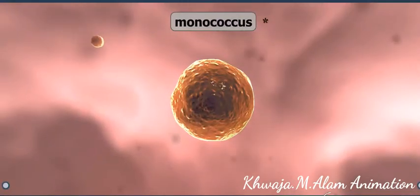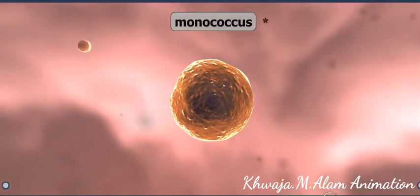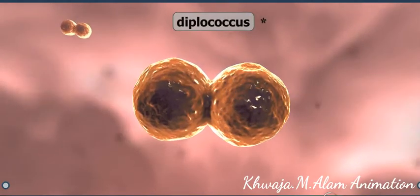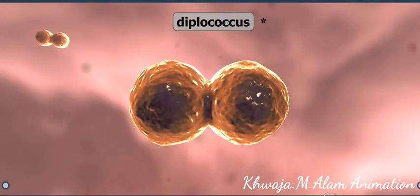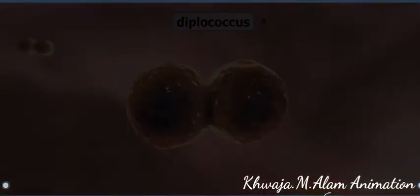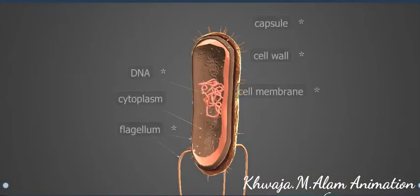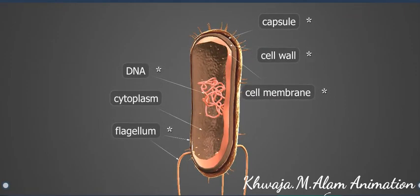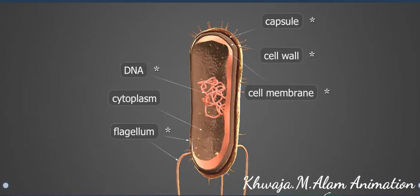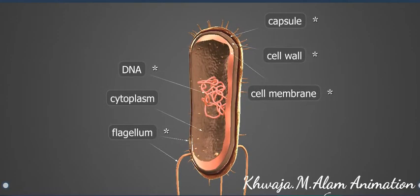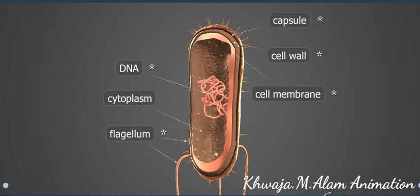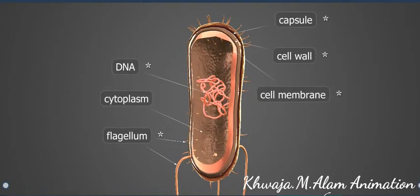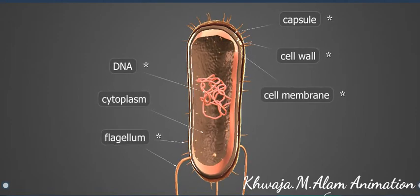Prokaryotic microorganisms can be found everywhere on the planet. The ancestors of modern bacteria appeared on earth about 3.5 billion years ago. The cytoplasm is the basis of a bacterium cell — it contains the genetic material, which is the ring-shaped DNA. Unlike in eukaryotes, proteins are not attached to the DNA in prokaryotes.